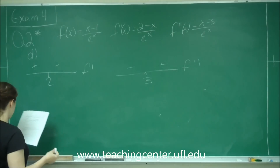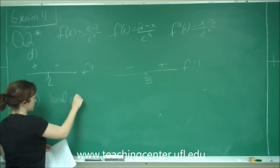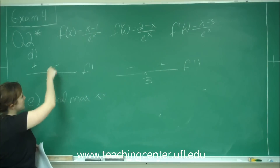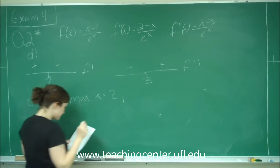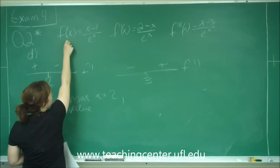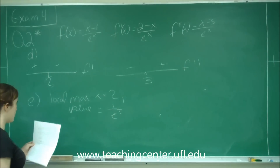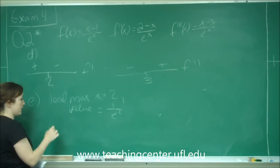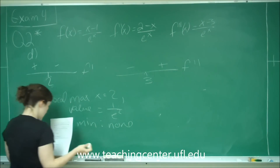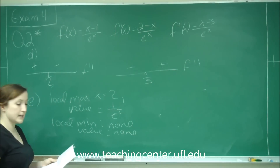Part E asks for relative local max and min. For local max, f prime goes from positive to negative at x equals 2, so we have a local maximum there. Plugging 2 into the original function gives 2 minus 1 over e squared, which is 1 over e squared. For local minimum, our first derivative has no point going from negative to positive, so local minimum: none, and the value is none.